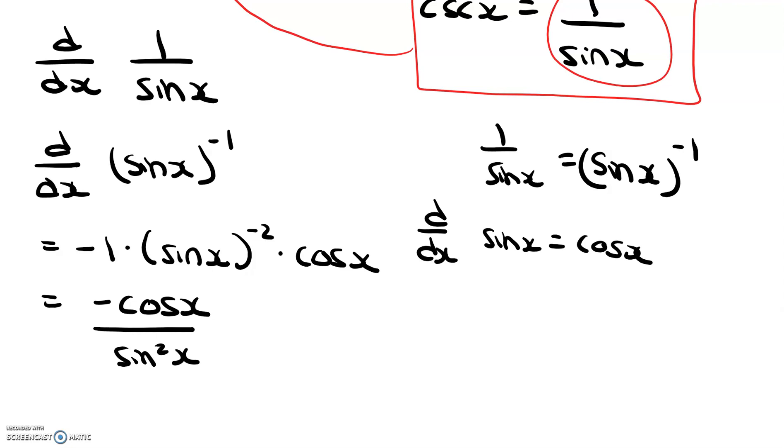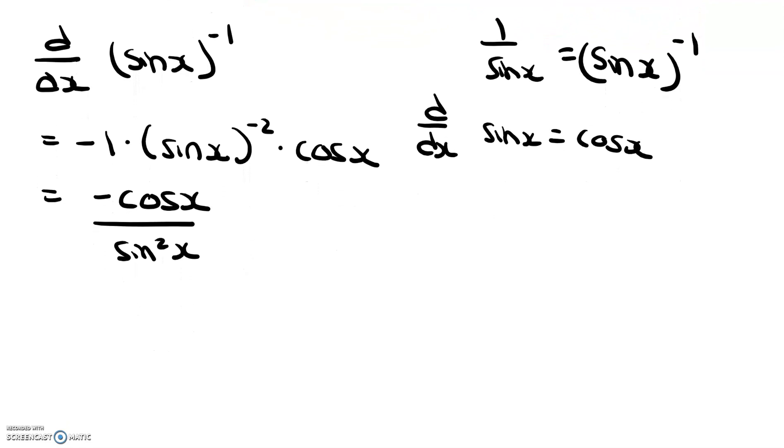Okay, now that we have this in this form, again, we're going to want to rewrite it. So, it's a little more simple. So, we're going to say that this is equal to negative cosine x over sine x times 1 over sine x.